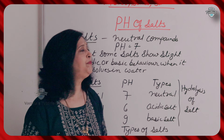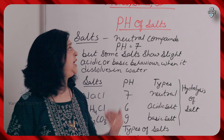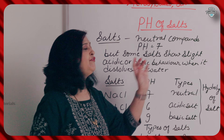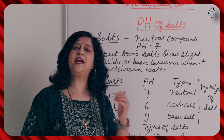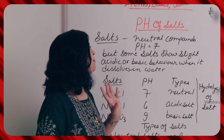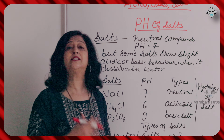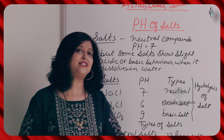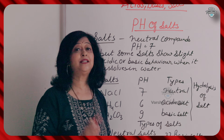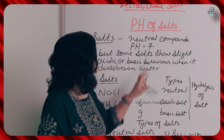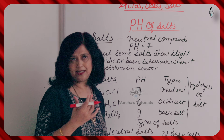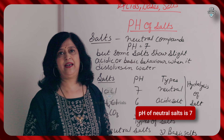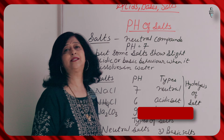pH of salts. We all know that salts are formed when acid and base react with each other — they form salts and water. This is the example of common salt and neutral salt. Now you know that when salts are like sugar solution, salt solution, or pure water — like pH of 7 — the salt, like sodium chloride or sugar solution, which is neutral salt, also has pH of 7.